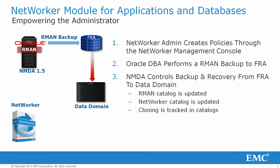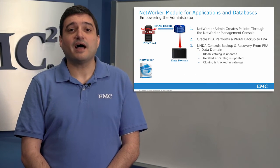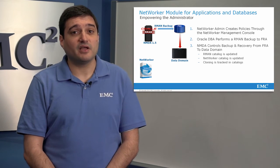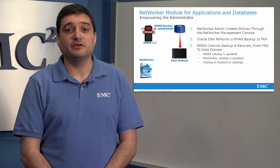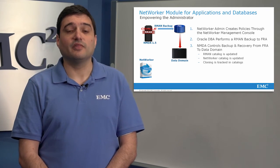Without Networker, if the FRA fills up before an RMAN backup is completed, the backup fails and human intervention is normally required to free space on the FRA. With Networker managing the FRA, if it is at or near capacity, Networker will automatically backup the FRA and clear off the data with no human intervention required, and the backups will complete without error.